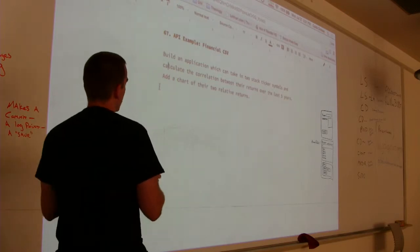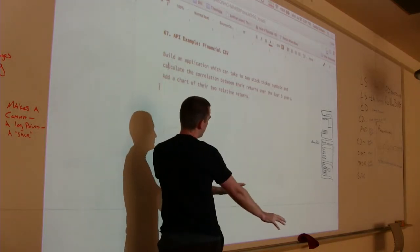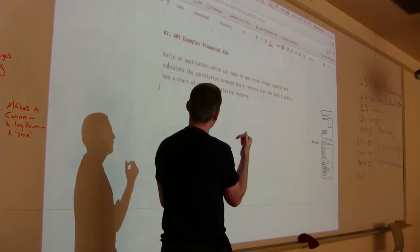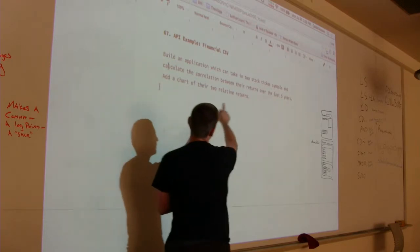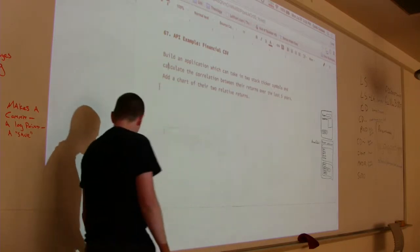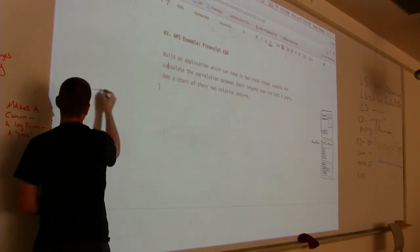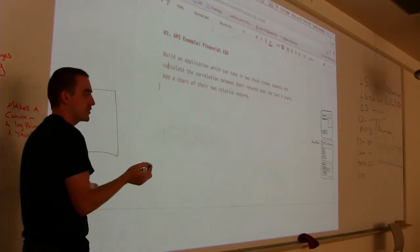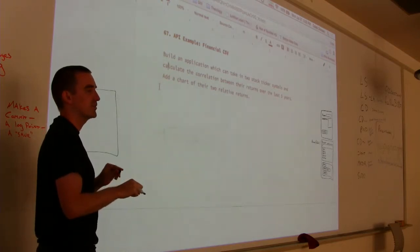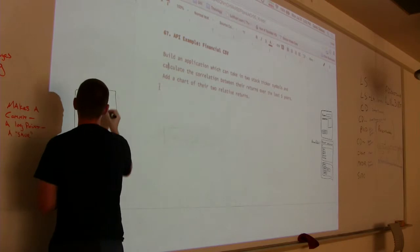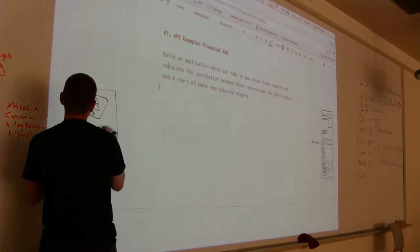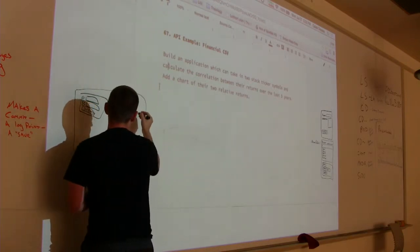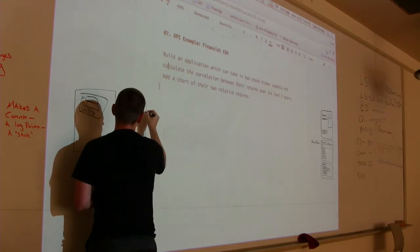So calculating correlation between the returns, the correlation is a function that takes two arrays of numbers. It gives you a single number at the end. It basically tells you as one moves, the other moves likewise. And so correlation of one means they're perfectly correlated. The correlation of negative one means they're exactly opposite correlated. So if one goes up, the other goes down by the exact same amount.